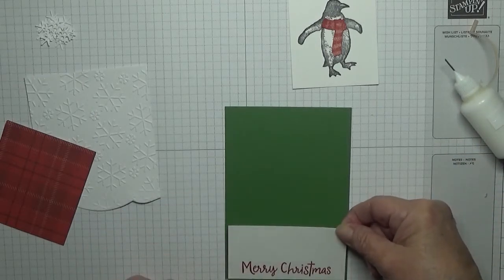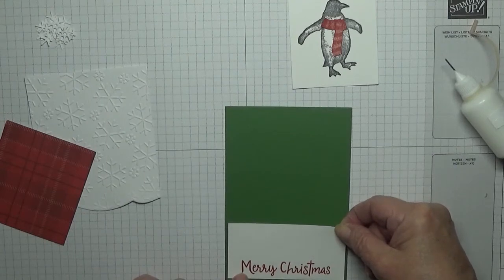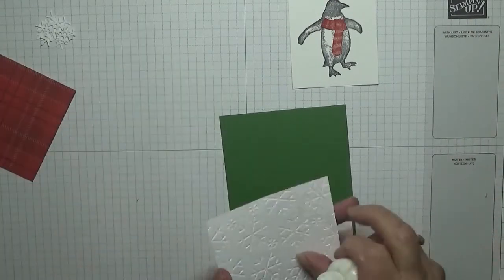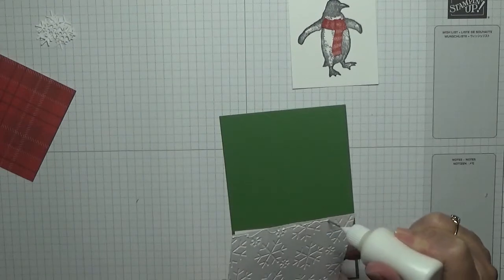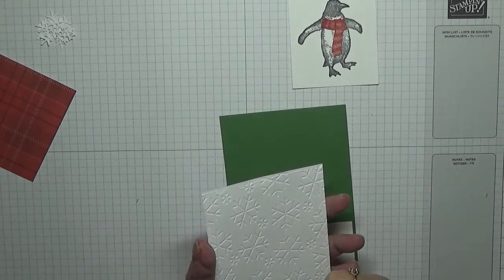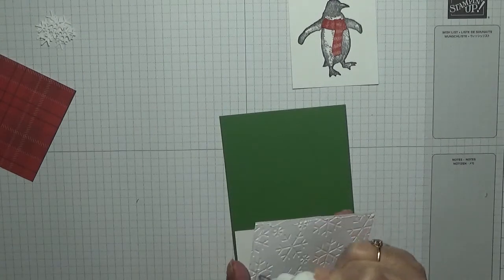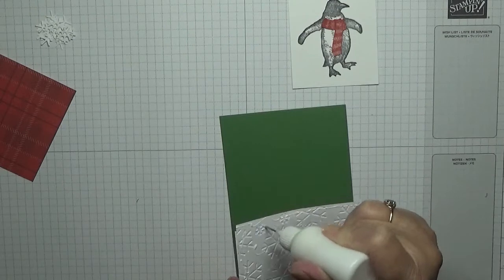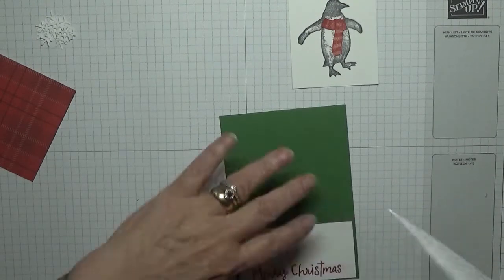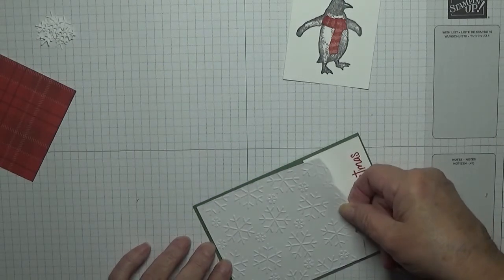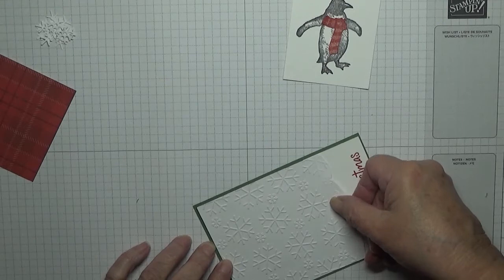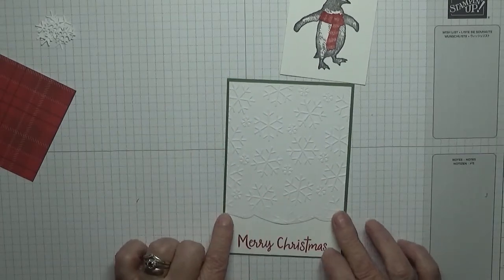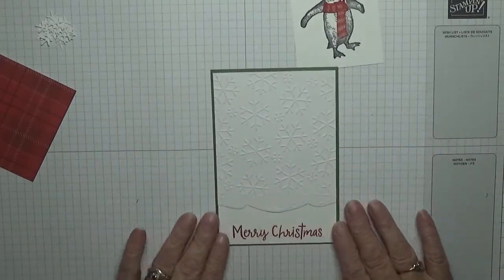I'm going to stick this down first, leaving the border at the bottom on each side. And we're going to stick down the embossed piece. Extra glue because it's been embossed. We're going to stick that down and make sure it's like that, either side, so it all meets up, so it looks like it's one piece.